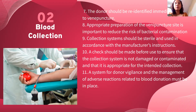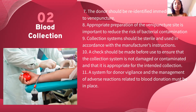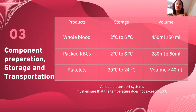Number eleven: a system for donor vigilance and management of adverse reactions related to blood donation must be in place. We are taking care of the health of the donor. For example, there was a case where an intern accidentally punctured the basilic artery instead of the basilic vein, causing the donor's arm to swell up — showing why we need to protect the health of the donor.